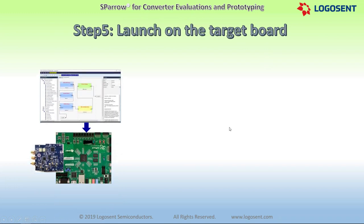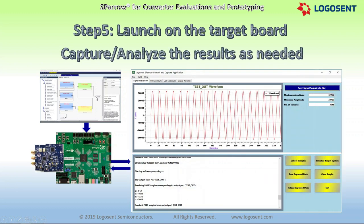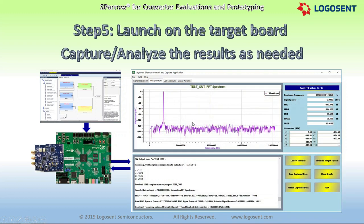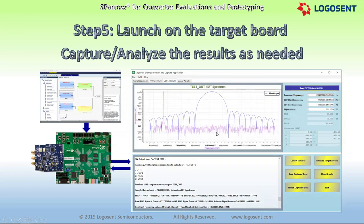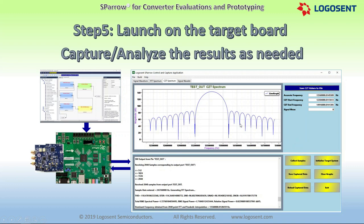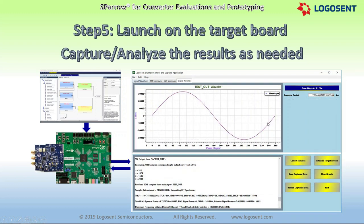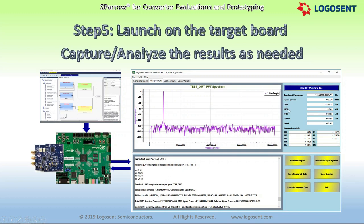The fifth and final step is to launch the bitstream and the ELF onto the FPGA and the processor on the target board. If there are software output ports in the system schematic, the sample data from those ports can be captured in the host PC using the Sparrow control and capture application. The application includes a signal waveform display, FFT spectrum display, CZT spectrum display for zoomed spectral analysis, and a coherent sample waveform display for standing waveforms. Various parameters like THD, SFDR, SNR, SINAD, and ENOB, along with a list of harmonics, are also derived and displayed with the FFT spectrum. The captured samples and derived parameters can be written out to files for future analysis.